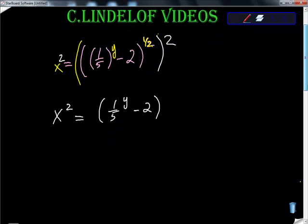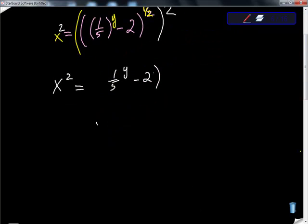So it actually is going to clean up pretty nice now, I think. So actually we can get rid of these parentheses. I'm going to add two to both sides. So we get x squared plus two equals one-fifth to the y power.